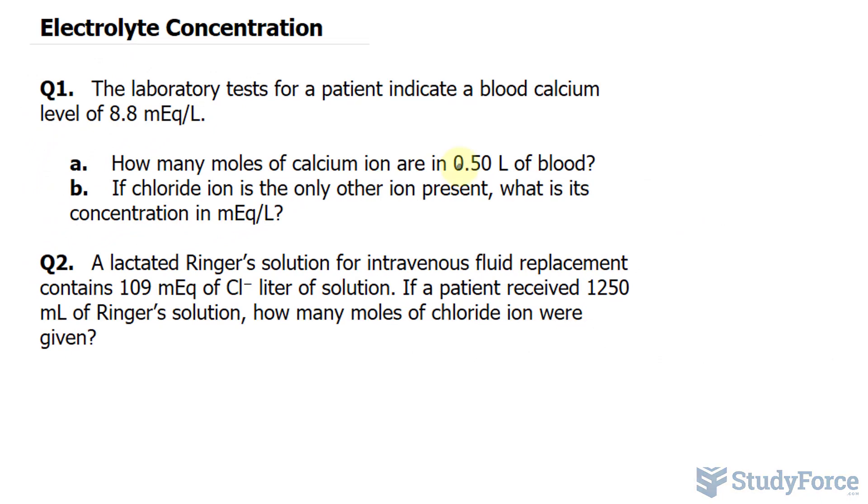I want to start off by multiplying 0.50 liters to 8.8 milliequivalents per liter, because what that will do is give me the milliequivalents. So I'll take 0.50 liters and multiply that to 8.8 mEq at the top and 1 liter at the bottom. Notice that the liter unit will cancel out, giving us milliequivalents.